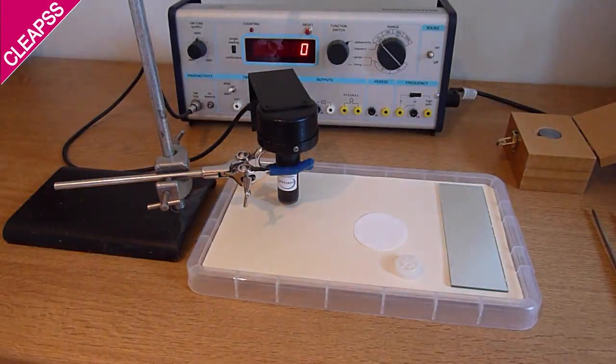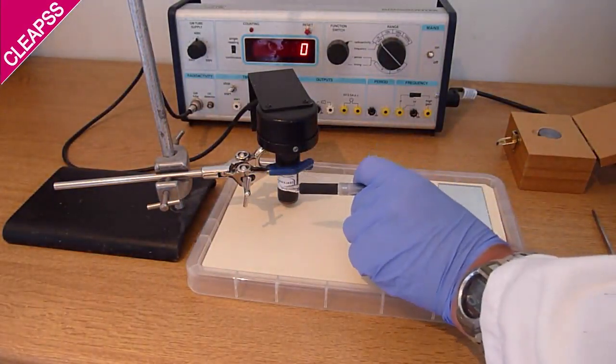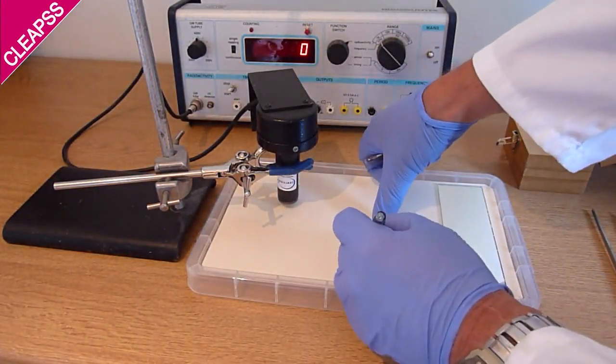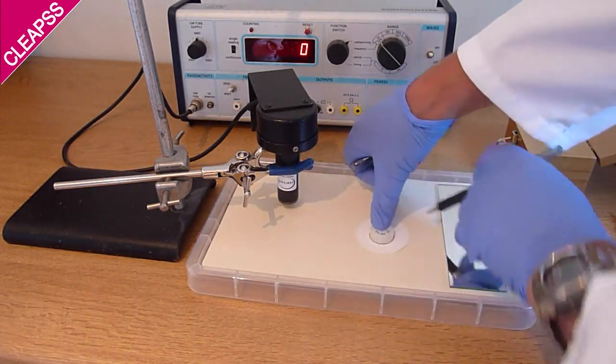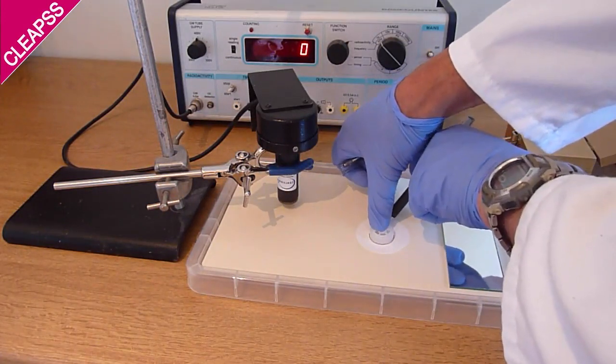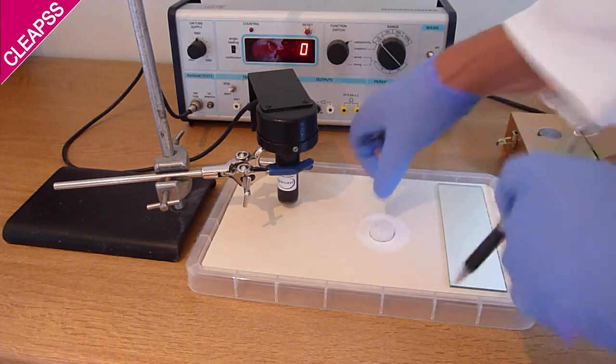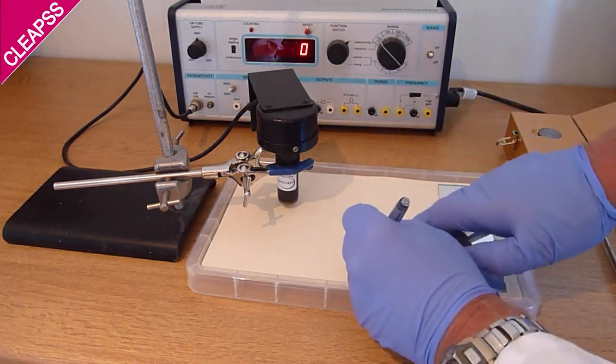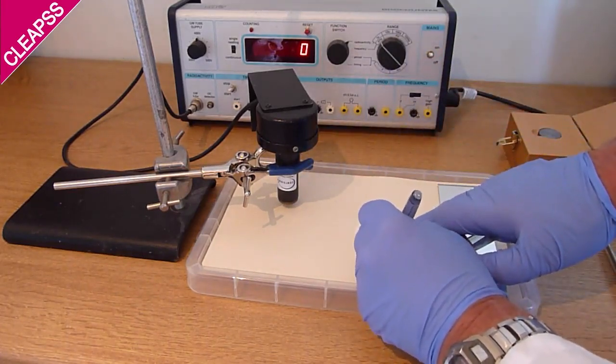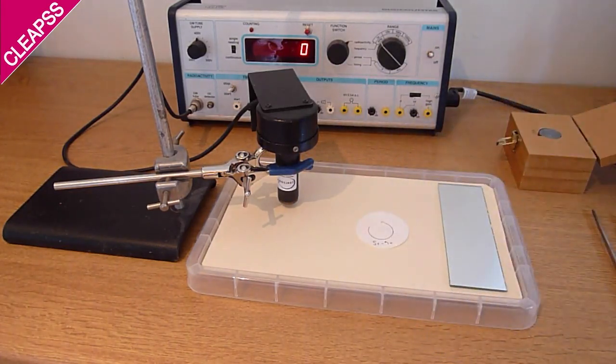And now to the leak test. Draw a 20mm diameter circle onto the filter paper. I use the GM tube cap to do this. Label the wipe with the source you are about to leak test.